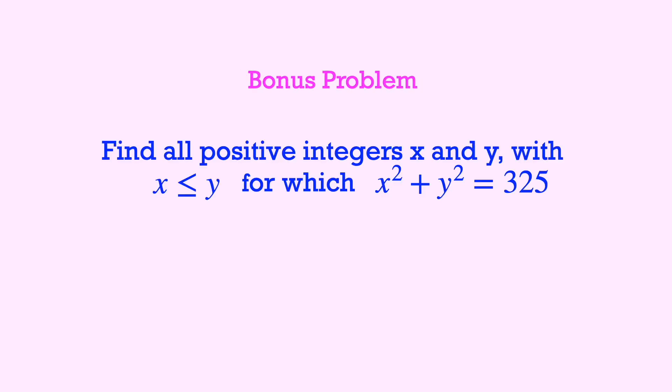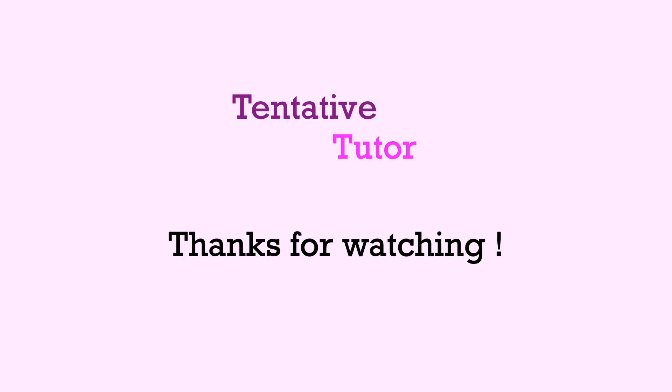Now here's our bonus problem. Find all positive integers x and y with x less than or equal to y for which x squared plus y squared is 325. Do you know how to solve this one? Leave us your answer in the comments. And once again, thanks for watching.